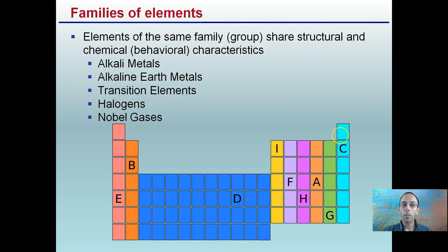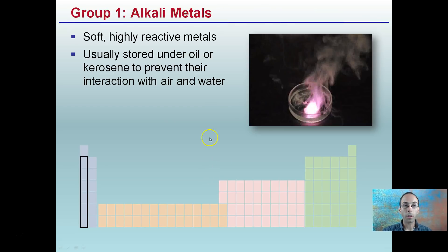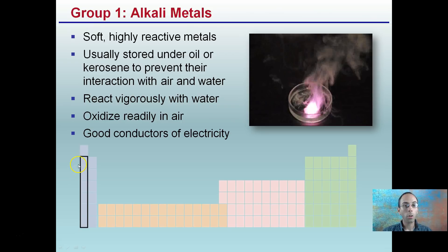Now, the families of elements. Elements of the same family or group share structural and chemical behavior characteristics. This large block here is the transition elements, considered the same general family. Starting with the first one: alkali metals. They're soft, highly reactive metals, usually stored under oil or kerosene to prevent interaction with air and water. They react vigorously with water — potassium actually produces fire when just added to water. They oxidize readily in the air and are good conductors of electricity. It's important to remember that group 1 is alkali metals — they often get confused with the second group.